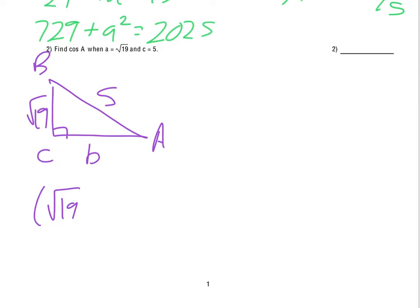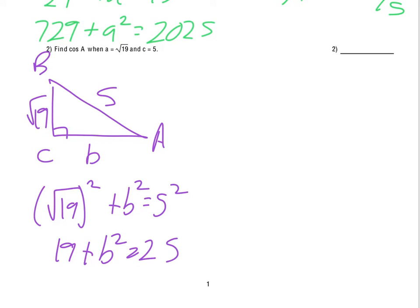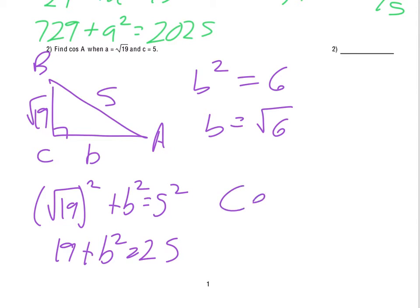So A squared — which is the square root of 19 squared — plus B squared equals 5 squared. That gives us 19 plus B squared equals 25. Subtract the 19 from both sides: B squared is 6, so B is the square root of 6. With these triangles, only positive results can happen. So the cosine of angle A would be the adjacent side B, which is the square root of 6, over the hypotenuse, which is 5.